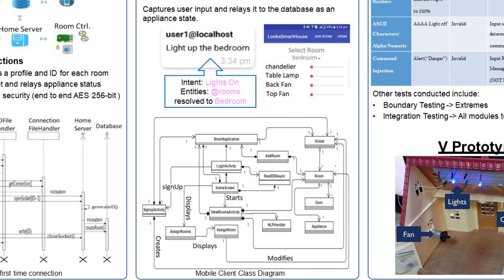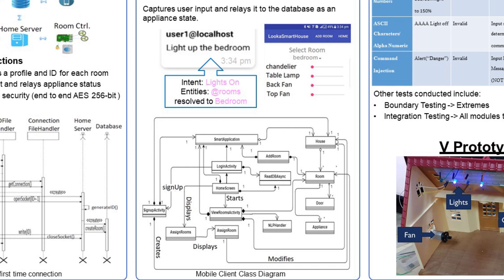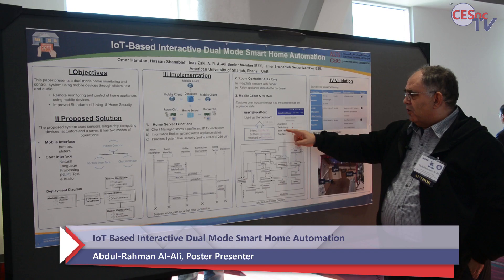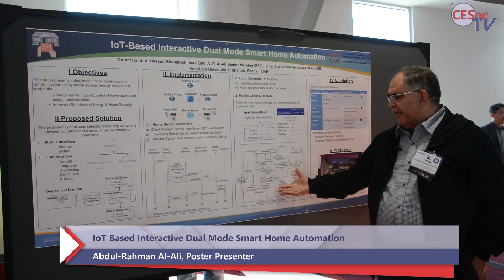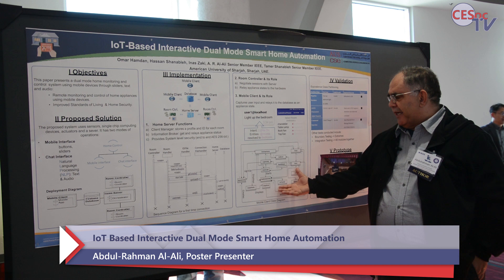We also have a slider — for example, if the user wants to set the chandelier to 60% or the table lamp to 40%, they can use the slider, virtual switches, natural language, or audio. This is the mobile application for the system.